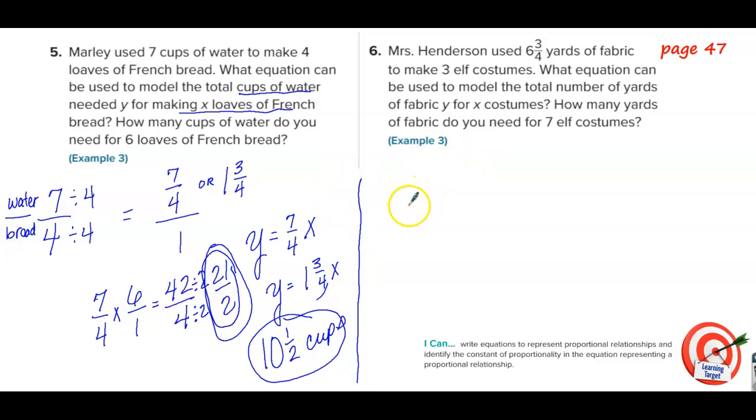Mrs. Henderson. Wow, Marley got in these problems and now Mrs. Henderson. What is she doing? She's making elf costumes? What the heck? I thought she was a gym teacher. Mrs. Henderson used six and three-fourths yards of fabric to make three elf costumes. What equation can be used to model the total number of yards of fabric for number of costumes? Well, if she used six and three-fourths yards to make three costumes, we divide top and bottom by three.